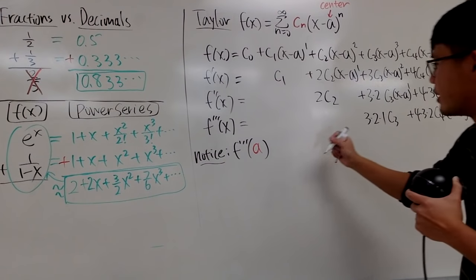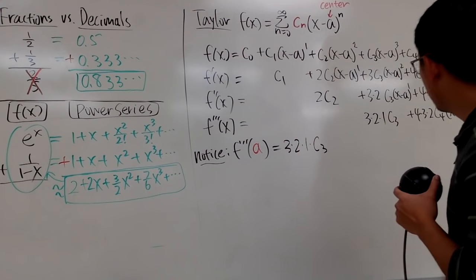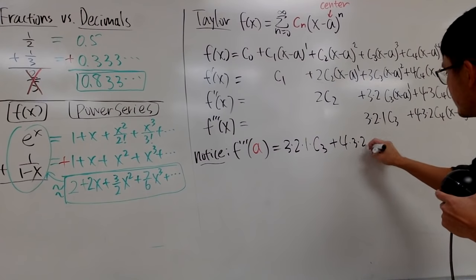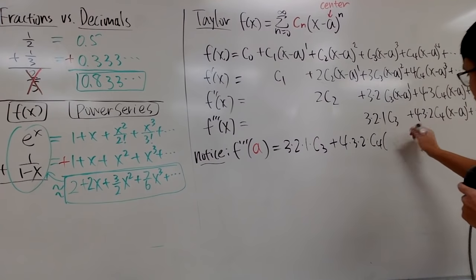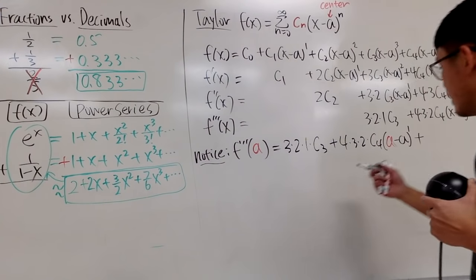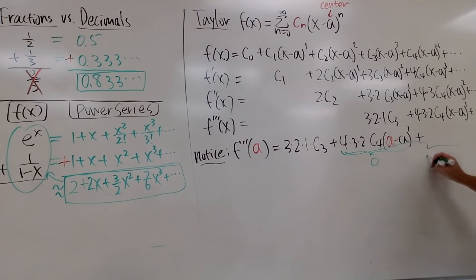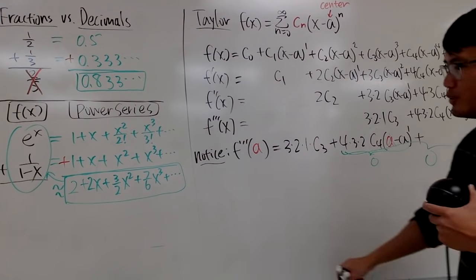this right here is just a constant term. So this right here stays, which is 3 times 2 times 1 times c3. And this right here, it's going to be plus 4 times 3 times 2 times c4x, which is the a now. But we are minusing the a to the first power. And then, this right here, it's actually a done deal because it's just a zero. And in fact, all of them, they all have a minus a to some power. So everybody right here will be zero.